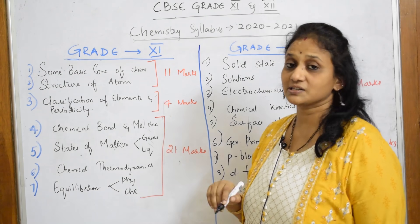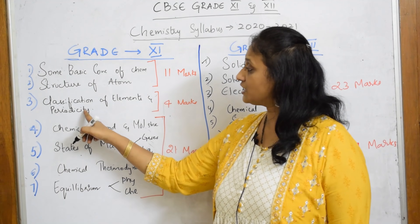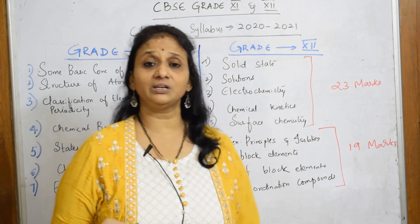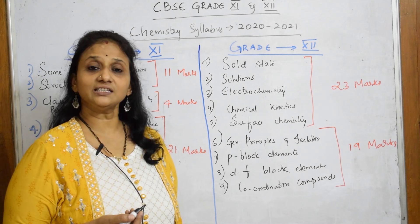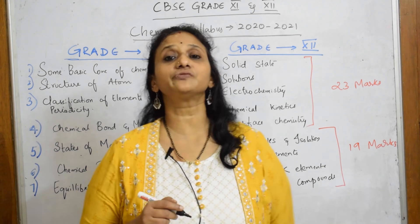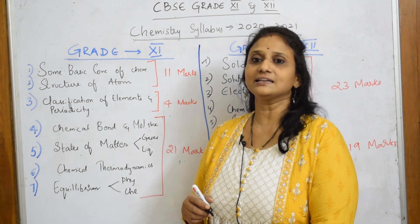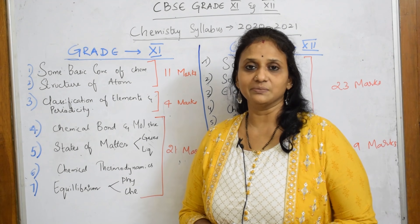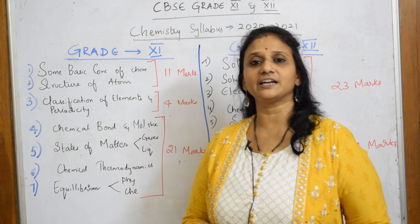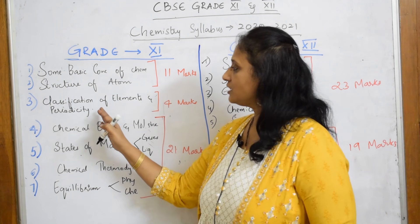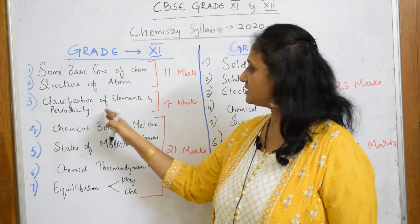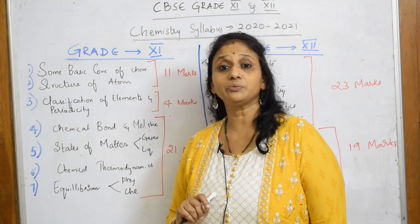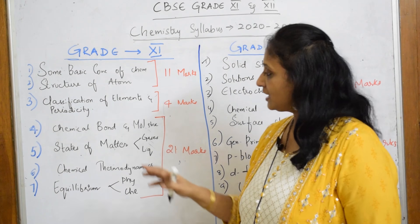Next comes 'Classification of Elements and Periodicity.' You've been learning something similar in grade 10 — it's an extension of the periodic classification of elements from grade 10, which was the fifth unit there. Here, 'Classification of Elements and Periodicity' carries four marks, so you need to be very careful with that chapter.